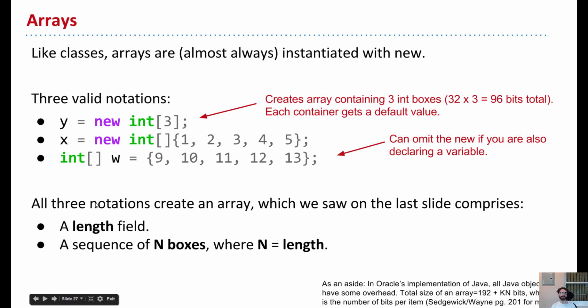There's three notations for defining arrays in Java. And the first here is just a simple creation of an array, but not specifying the values that go in an array. So this first syntax says the variable y, which I'm assuming has been declared earlier, I want to put in that 64-bit box the address of an array I'm now creating. That array will consist of three boxes of 32 bits each, along with the length three.